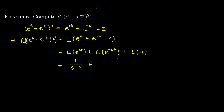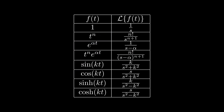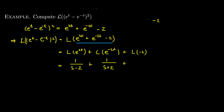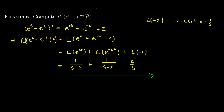From the table, e^{αt} has Laplace transform 1/(s - α), so the Laplace transform of e^{2t} is 1/(s - 2), and the Laplace transform of e^{-2t} is 1/(s + 2). For -2, since it's -2 times the constant 1, and the Laplace transform of 1 is 1/s, by linearity the Laplace transform of -2 is -2/s. So the full answer is 1/(s-2) + 1/(s+2) - 2/s.